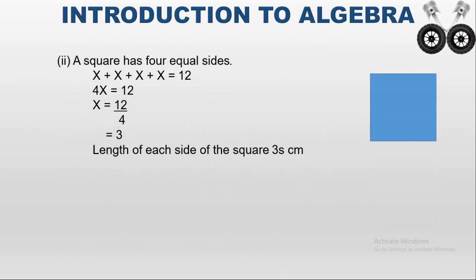For the second subdivision, we find the length of each side of a square. In a square all sides are equal, so if one side is X, then X plus X plus X plus X equals 12. That gives 4X equals 12. When 4 moves to the right side it becomes division: X equals 12 divided by 4, which is 3. So the length of each side of the square is 3 centimeters.